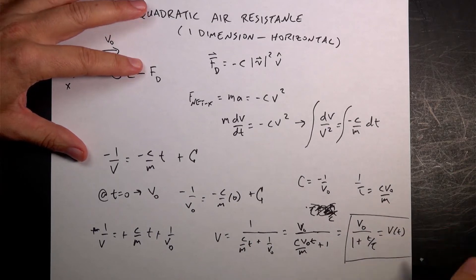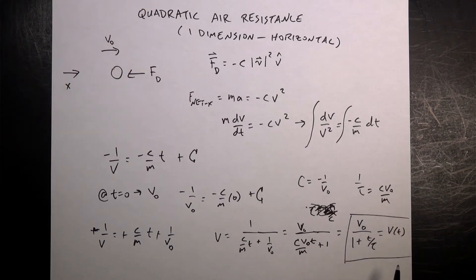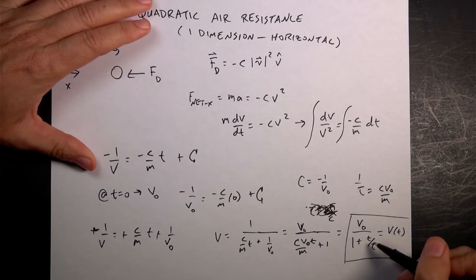So this becomes v0 over 1 plus t over tau. I switch the order just to make it a little bit nicer. And that's going to be v as a function of t. So there's my velocity as a function of time. And that's my tau. Is that right? So tau is m over v0 c. Yeah. And then that has units. This is going to be, this does have units of 1. Tau has units of time. So I get, this has no units, and I can add that to 1, and I get units of v0.